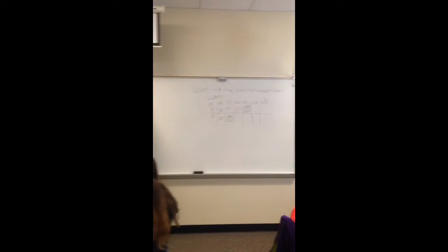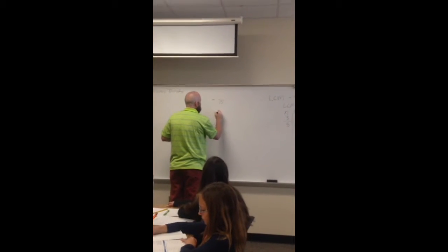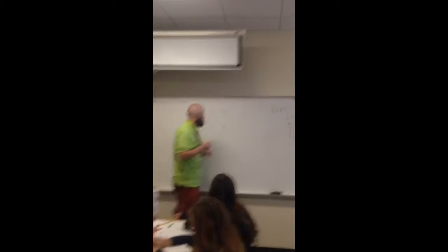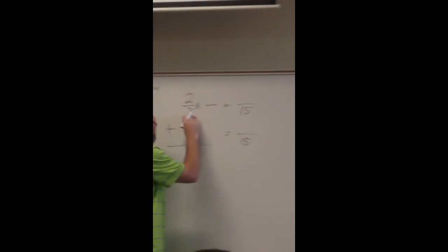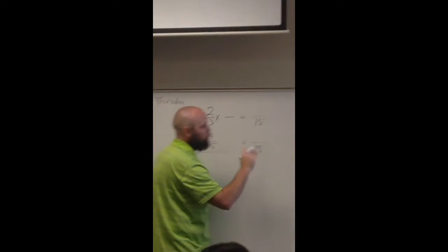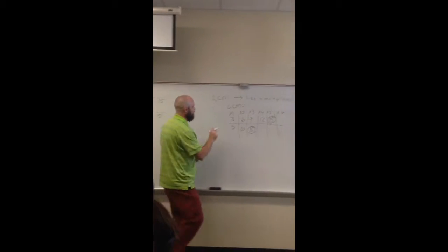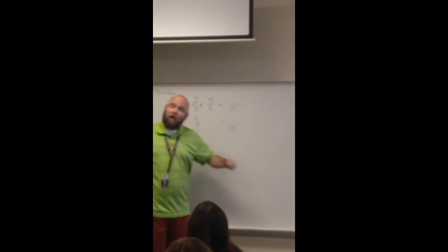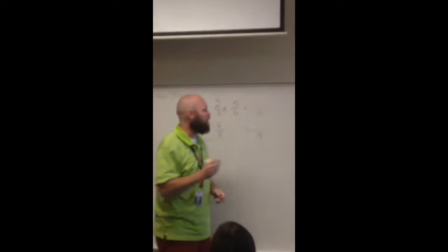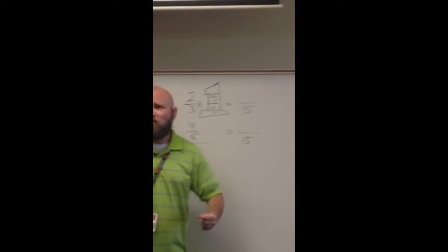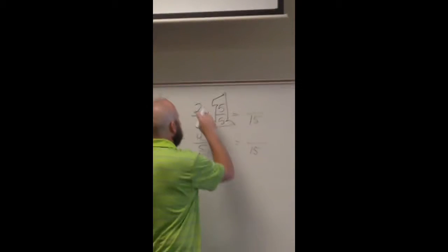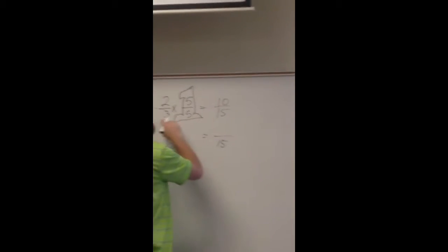I need to change both of these fractions so that they have a denominator of 15. Because you have notes in your journal, you can multiply by a fraction that equals 1. I need to find 3 times what equals 15 — I can go to my multiplication chart: 3 times 5 equals 15. I am going to multiply both my numerator and denominator by 5, because that doesn't change the value, because 5 over 5 equals 1. When multiplying fractions, I multiply straight across: 2 times 5 is 10, 3 times 5 is 15.